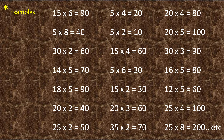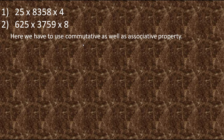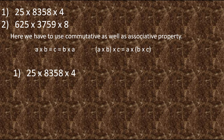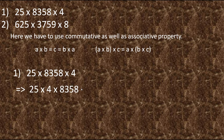Now let's solve the questions. Here again we are going to use commutative property as well as associative property. For the first equation, we need to find two numbers that give a multiple of 10. As we know, 25 times 4 is 100. Let's bring these two numbers together using commutative property, giving us 25 into 4 into 8358, and then group them using associative property.